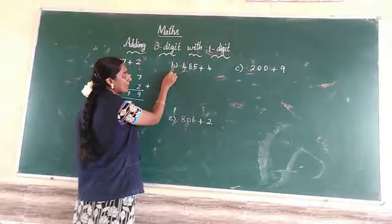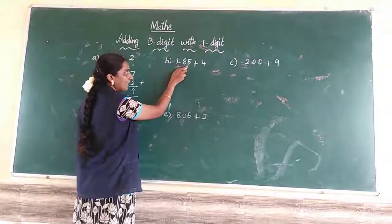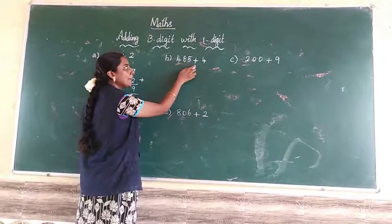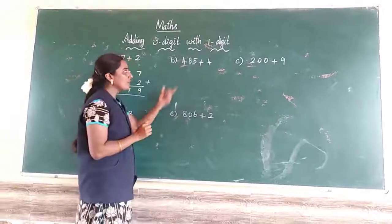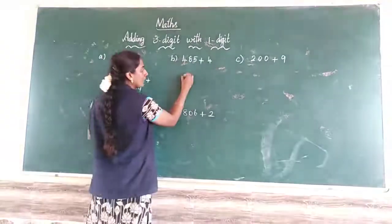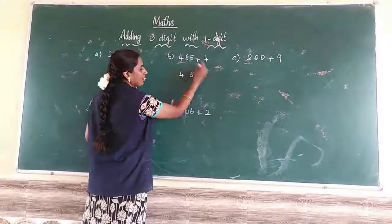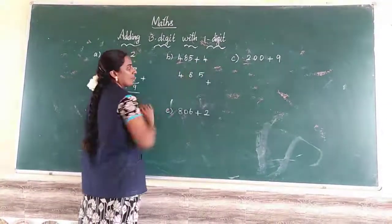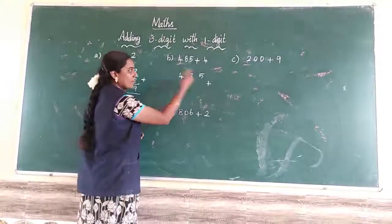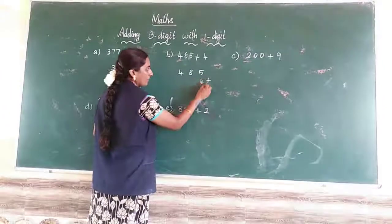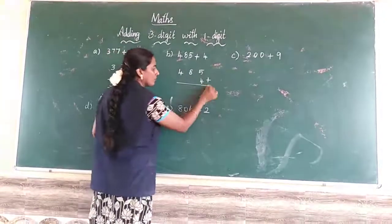Next step, B: 485 plus 4. First step, we have to start from this number: 4, 8, 5. Next step, plus. Next step, don't write in here. We have to start from writing with 1 space first. So 1 space number is 4.